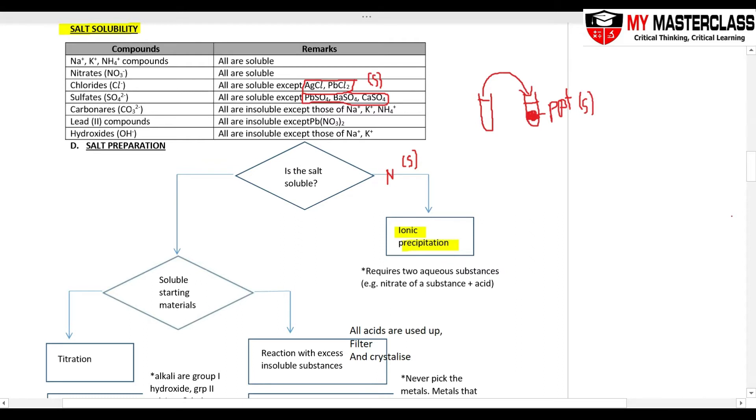And it is actually the five salts that are not soluble. For this method to work, you must pick two aqueous substances, and most of the time we will pick the nitrate. Why the nitrate? Because all nitrates are soluble, so pick it and you will always be aqueous, and pick the acid.